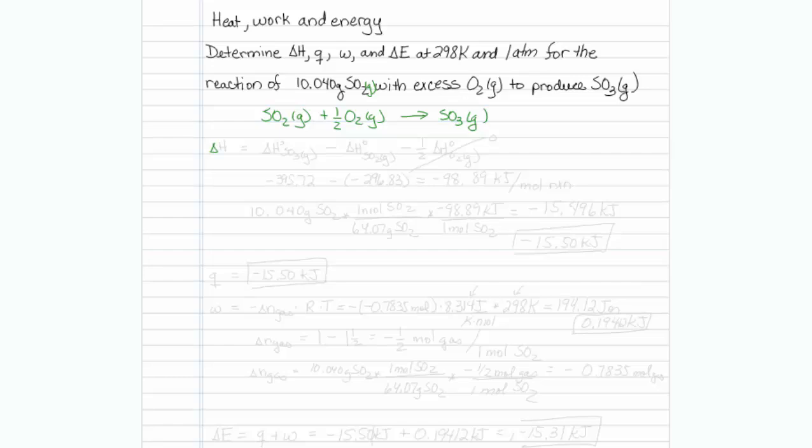Delta H we can actually get from the tables. So we're going to have to take the heats of formation of products minus heats of formation of reactants. So this should be equal to the heat of formation of SO3 minus the heat of formation of SO2 minus one half the heat of formation of O2.